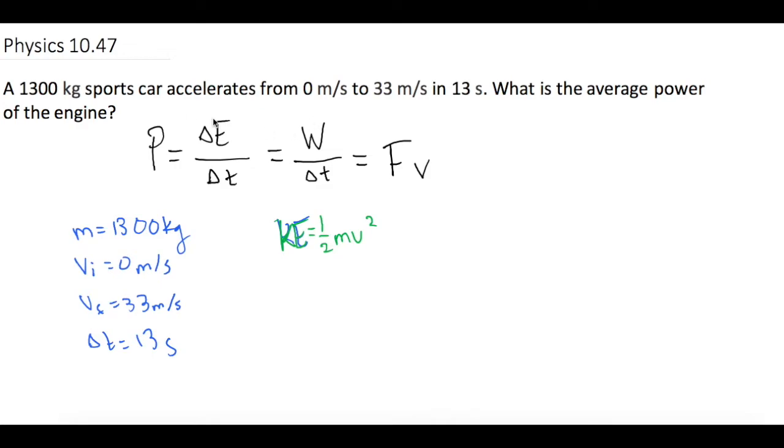So let's go ahead and write the first relationship. The power equals delta E over t. Power equals delta E over delta t.